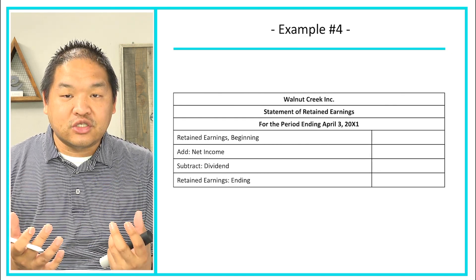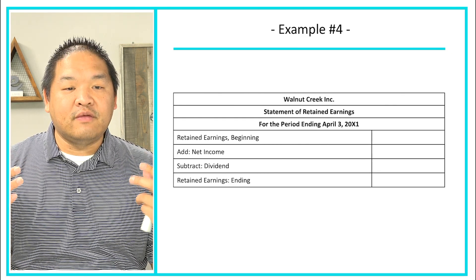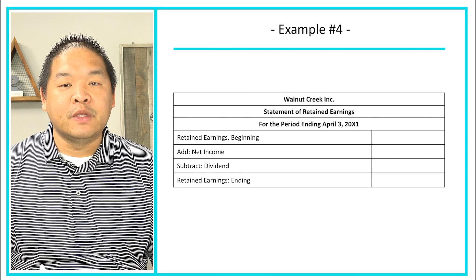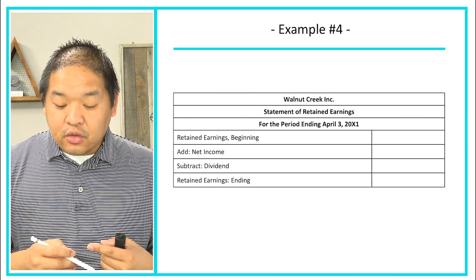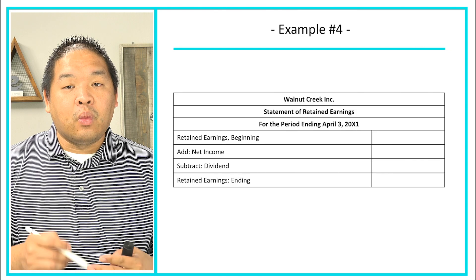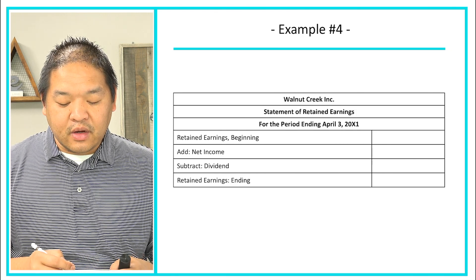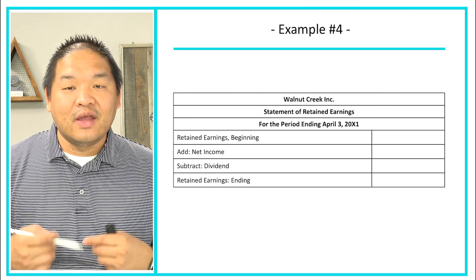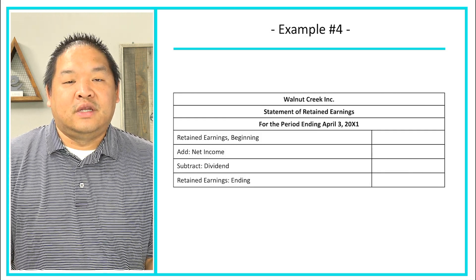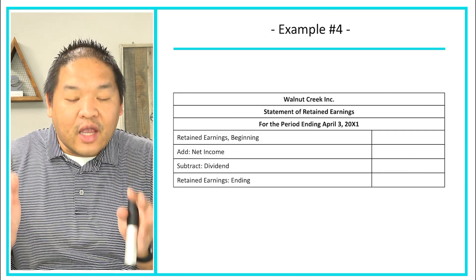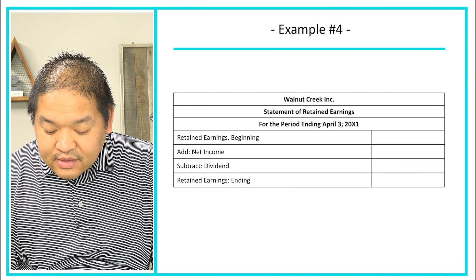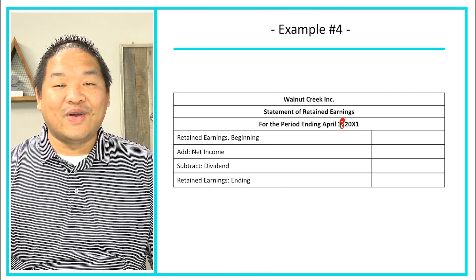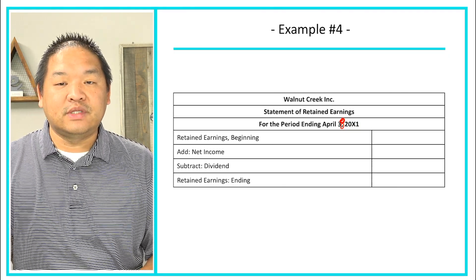So with that, here's our statement of retained earnings. At the very top we have the who, the what, and the when. Who is this for? Walnut Creek Inc. What is this? The statement of retained earnings. And for what period? This is for the period ending April 30th — it says April 3rd, that's a typo, it should be April 30th, 20X1.